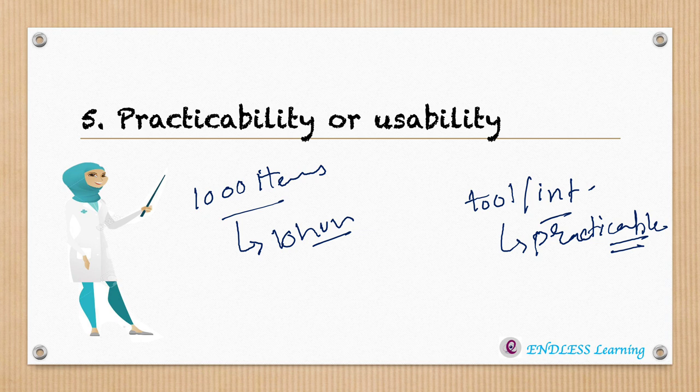These are the five characteristics of a tool. I hope you have understood. First is validity, then reliability, then objectivity, then we have sensitivity, and also practicability or usability.